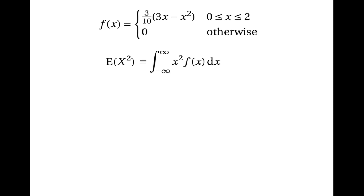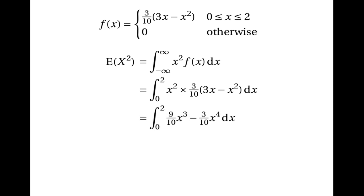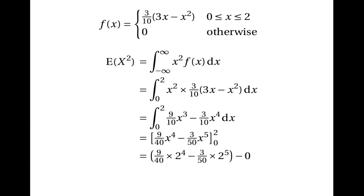To find the variance we first calculate E[X²], which is the integral of x²·f(x) over all possible values of x. We integrate x²·(3/10)(3x − x²) between 0 and 2, giving the integral of (9/10)x³ − (3/10)x⁴, which evaluates to (9/40)x⁴ − (3/50)x⁵ between 0 and 2. Substituting gives (9/40)(16) − (3/50)(32) = 42/25.